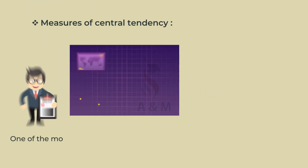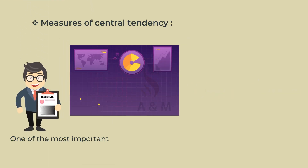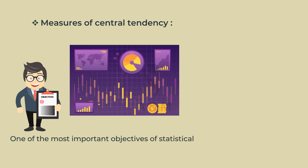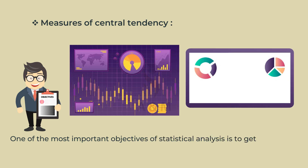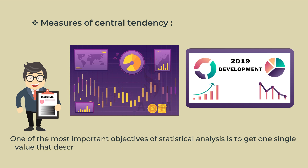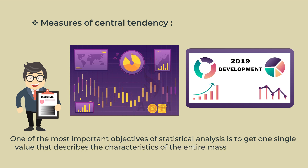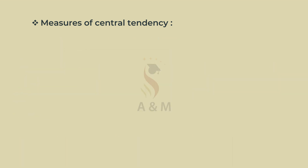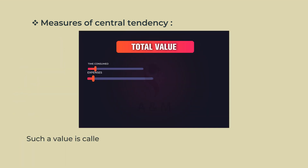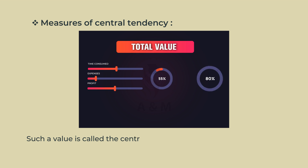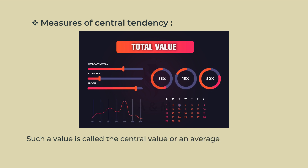One of the most important objectives of statistical analysis is to get one single value that describes the characteristics of the entire mass of data. Such a value is called the central value, or an average, or the expected value of the variable.